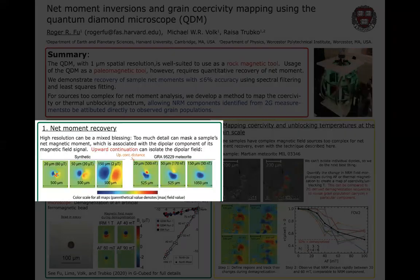First of all, we've developed and validated a protocol for quantifying net magnetic moments, much like has been done for other magnetometers like the 2G cryogenic magnetometer and a SQUID microscope. The extra challenge with QDM data is that sometimes it has too much spatial resolution, so we have to perform upward continuation to isolate the dipole component of the magnetic field, which in turn can be used to compute the net magnetization. By testing on a number of synthetic source maps, we find that we can achieve accuracies of better than about six percent in net moment.